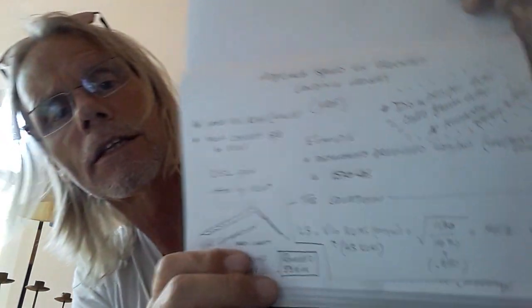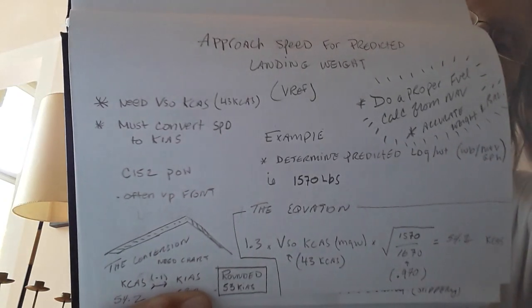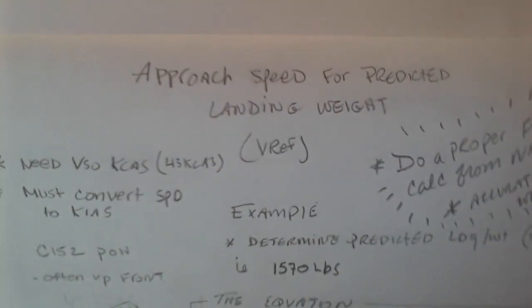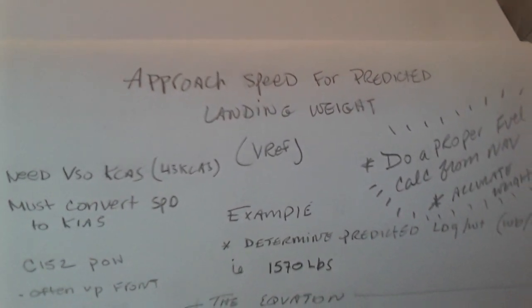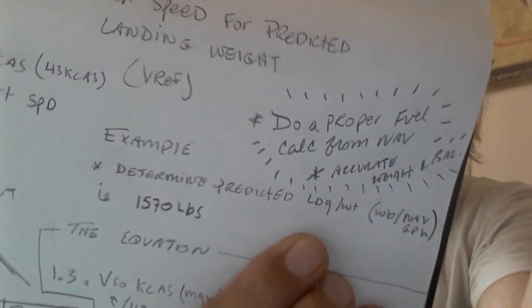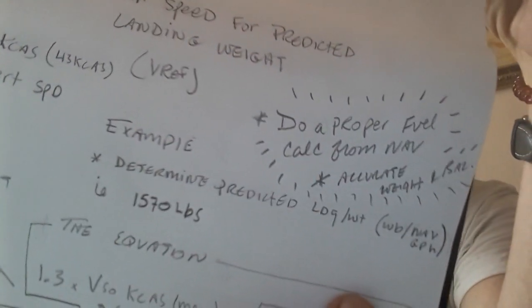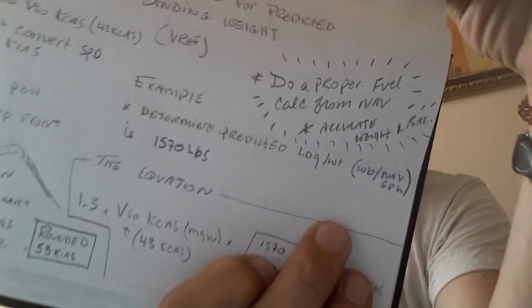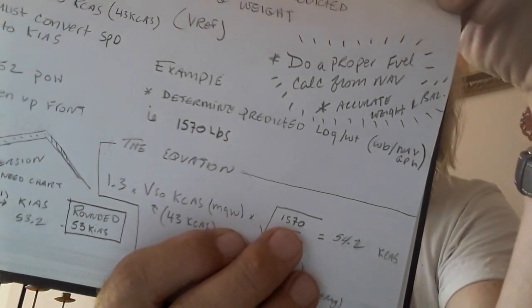I made a little guide here which you can see. Approach speed for predicted landing weight is often called V-ref in other circles. One of the first things you need to do is a proper fuel calculation from your nav and an accurate weight and balance — figuring out how much fuel you're burning and making sure you're legal and not outside of the CG limits.